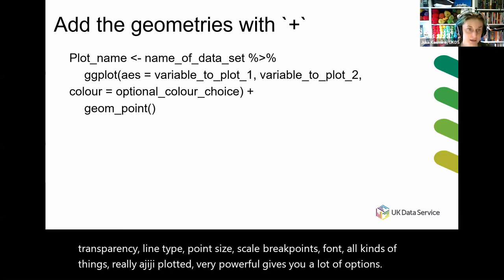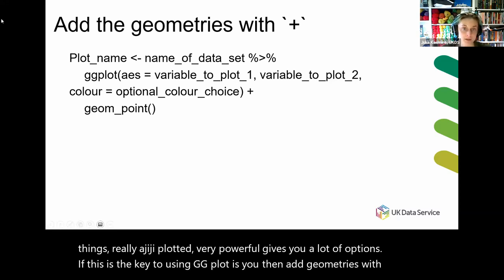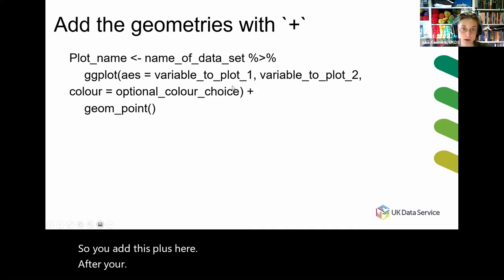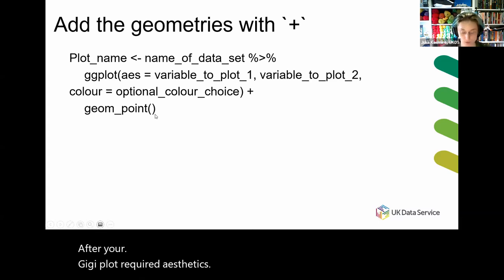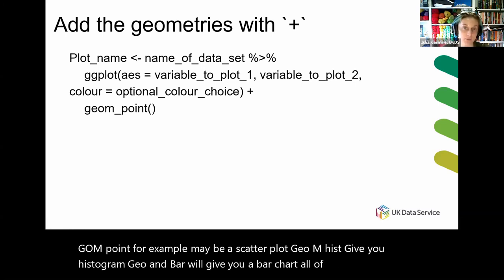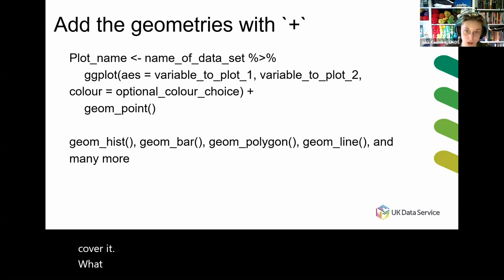The key to using ggplot is that you then add geometries with a plus sign. You add this plus after your ggplot and required aesthetics. For example, geom_point gives you a scatter plot, geom_hist gives you a histogram, geom_bar gives you a bar chart. There are a lot of options: hist, bar, polygon, line, and we'll cover them all.